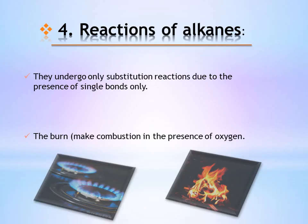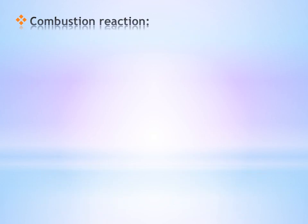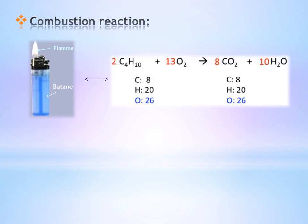Now, reactions of alkanes. Alkanes undergo only substitution reactions due to the presence of single bonds. They also burn and undergo combustion in the presence of oxygen. What is the equation for the combustion reaction of an alkane? Here we have an example with butane, molecular formula C4H10. A combustion reaction is a reaction with oxygen, so butane when it burns reacts with oxygen, producing carbon dioxide due to the presence of carbon atoms.